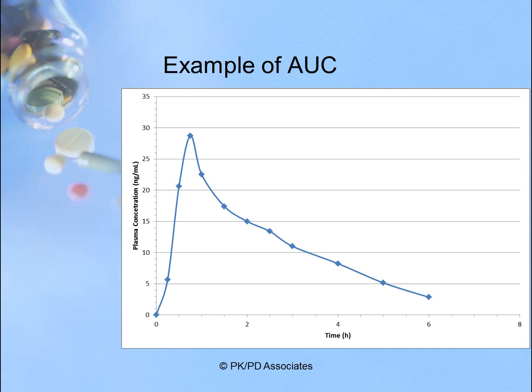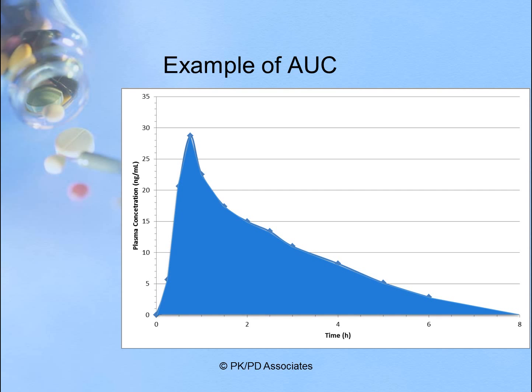Here's an example of area under the curve. We have a set of plasma concentration time data shown here from time zero, peaking about one hour post-dose and then declining down to six hours post-dose. Area under the curve is literally the area underneath that plasma concentration time curve. Once that's calculated, that number can be used to make comparisons between drug exposure.